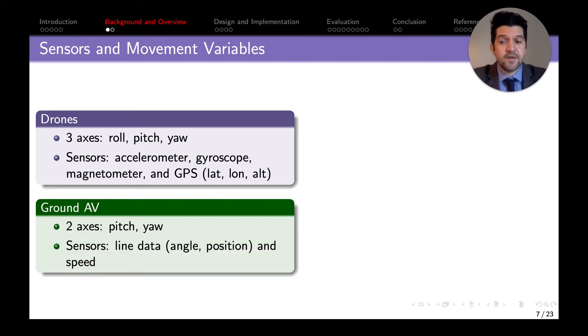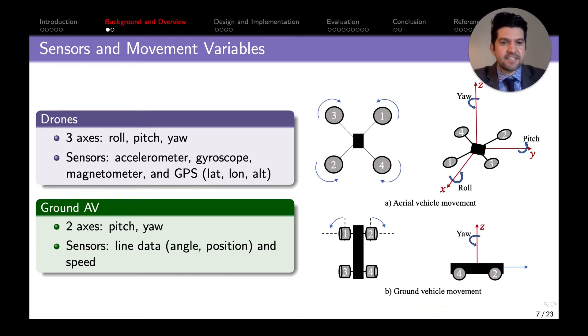For the ground vehicle, the two main axes it interacts with are pitch and yaw—the vertical movement and horizontal movement along its own axes. The main sensors are the line data, angle, position, and speed. This graph illustrates how it interacts with the main axes—this is the drone, this is the ground vehicle.